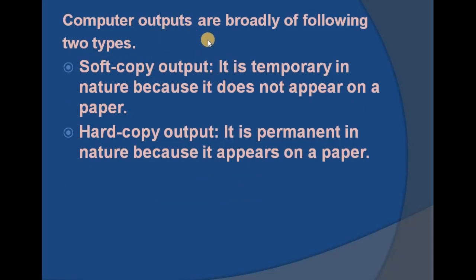Computer outputs can be categorized into two types: soft copy output and hard copy output. A soft copy output is what is displayed on a monitor or screen — we cannot touch it or feel it. For example, the information on a screen is visible, but we cannot physically use it or send it to somebody as a hard copy. It is temporary in nature — once the session is closed, it's gone.